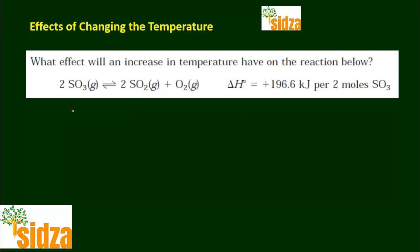Let's take one more example. In this reaction, SO₃ decomposes to SO₂ and O₂, and the delta H for the reaction is positive, meaning this is an endothermic reaction. SO₃ absorbs heat and converts into SO₂ and O₂. The backward reaction — SO₂ reacting with oxygen to give SO₃ — releases heat, making it exothermic. So the forward reaction is the endothermic step and the backward reaction is the exothermic step.